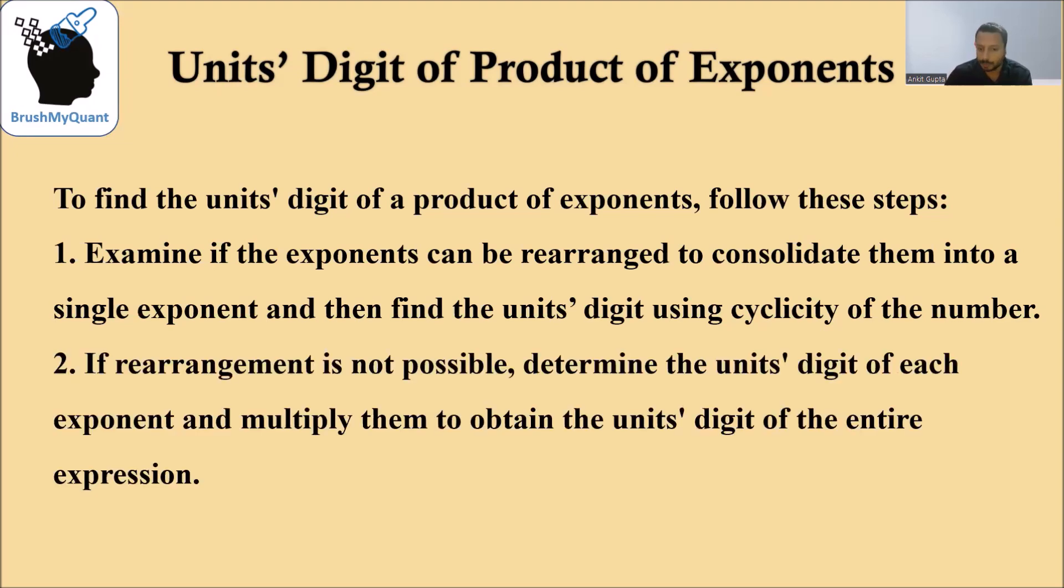If the rearrangement is not possible, then we need to determine the units digit of each of those exponents using the cyclicity method. And then we need to multiply the units digit of those exponents to get the final units digit of the number.